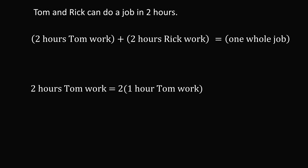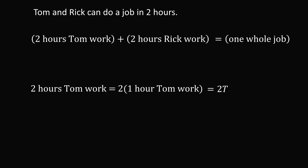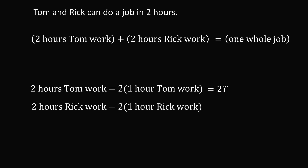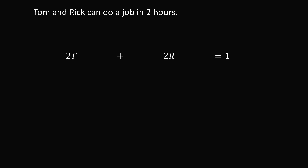Let one hour of Tom's work be the variable t, so two hours of his work equals 2t — representing the percentage of the job Tom completes in one hour. Similarly, two hours of Rick's work equals 2r. So the equation becomes: 2t plus 2r is equal to 1 (one whole job, i.e., 100%).